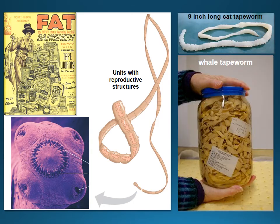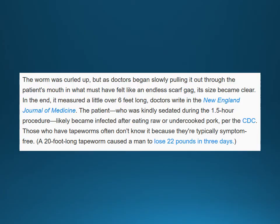Here's one found in a cat, one found in a whale - it's in a big jar. That's a big tapeworm. There was a news story about a tapeworm being pulled out of a patient's mouth - it was over six feet long. They got it from eating raw or undercooked pork. You don't always typically know you even have it, which is terrifying. If you lose a lot of weight quickly, that's a reason to go see a doctor - in this case, a 20-foot long tapeworm.